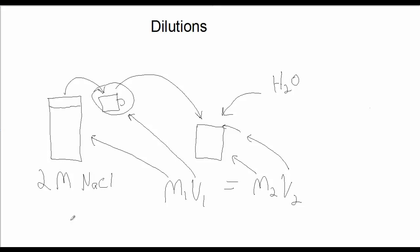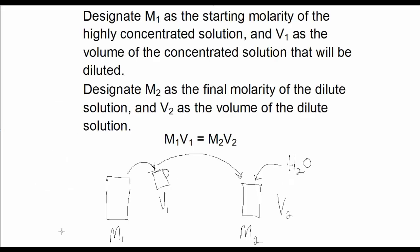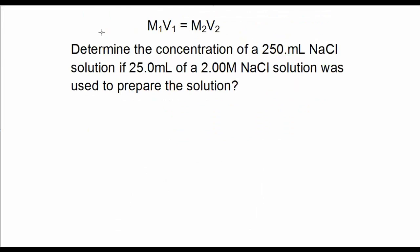Here I have the same sketch with some formal writing. M1 is the starting molarity of the highly concentrated solution, and V1 is the volume of the concentrated solution that will be diluted. M2 is the final molarity of the dilute solution, and V2 is the volume of the dilute solution. I'll do a couple of problems and hopefully this will make more sense.